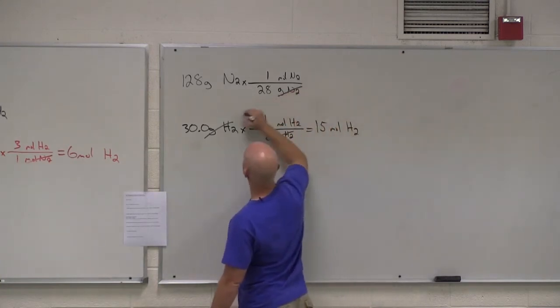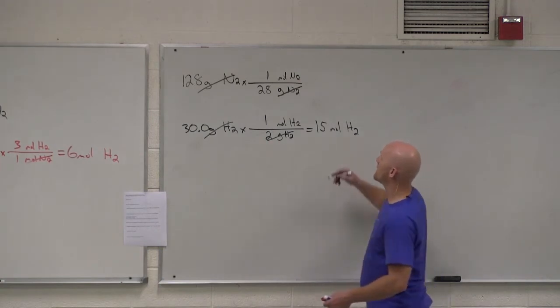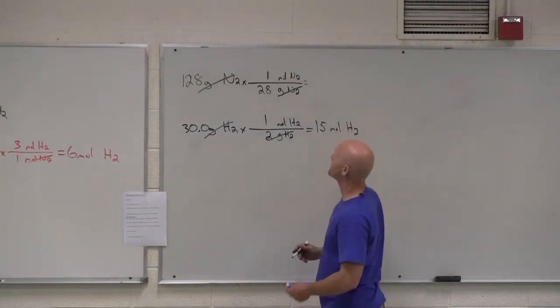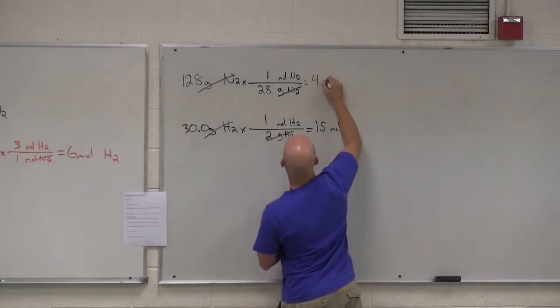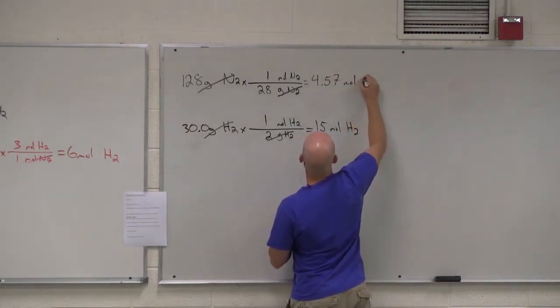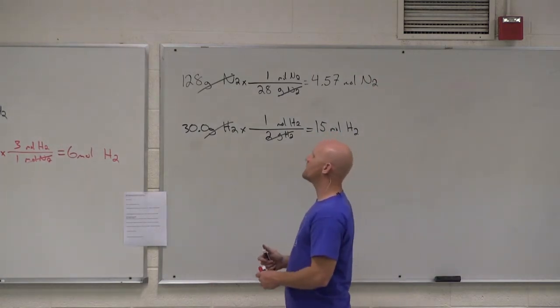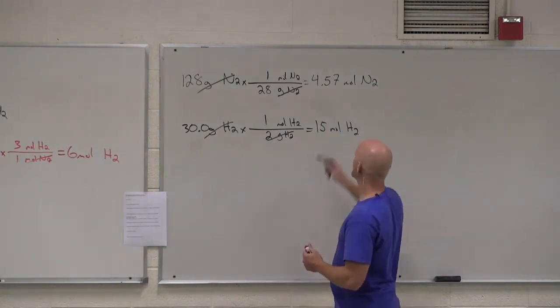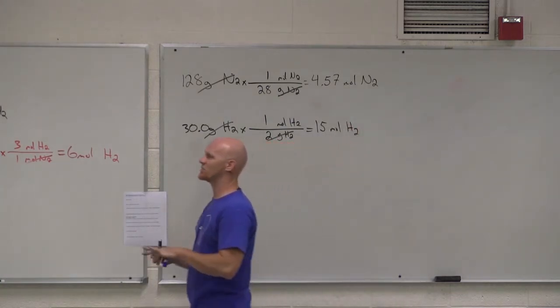And now this is probably something you're going to want to use your calculator for. Because this is not going to be a nice whole number. What does this come out to? 4.57 moles of N2.